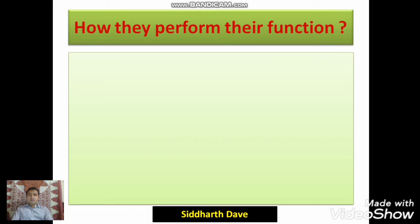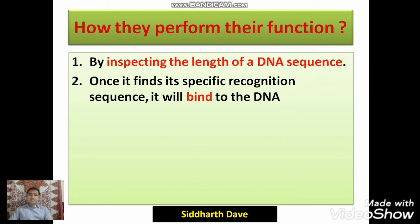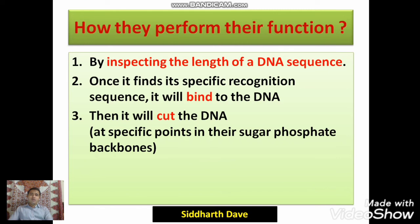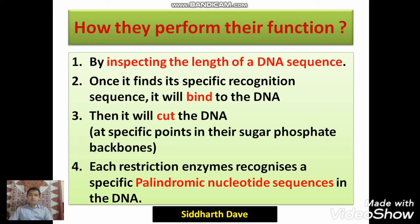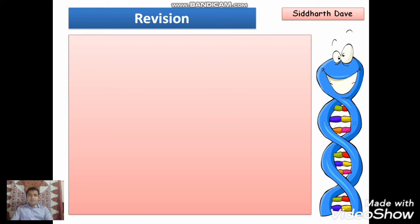Now let us see how restriction enzymes perform their function. First of all, the enzyme inspects the length of a DNA sequence — मतलब कि पूरा DNA एक बार scan करेंगे. After that, it will identify its specific sequence and bind to it. After binding, it will make a cut at that particular point on the sugar-phosphate backbones. The sequence at that site is a palindromic sequence.